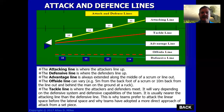I'm going to address the different attack and defense lines from the set piece. The diagram is an illustration from a scrum. The tackling line is the yellow line, the tackle line is the red line, the advantage line is the blue line, the offside line is the dotted red line, and the defensive line is the green line.